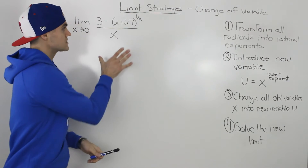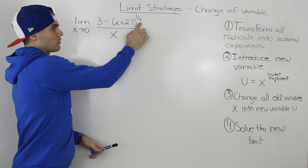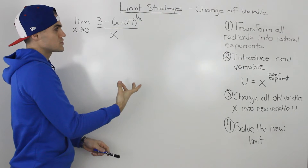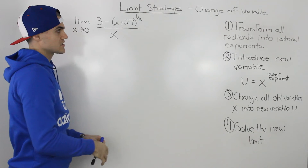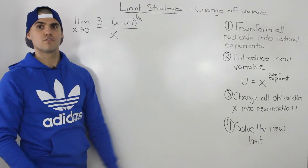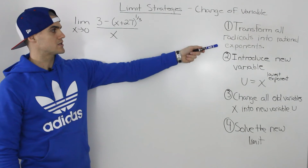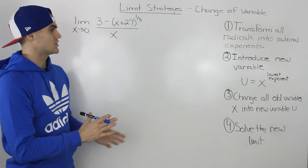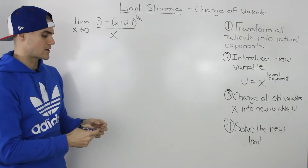The first thing to recognize with this particular limit is this power of 1/3. Whenever you have a rational exponent other than 1/2, or some kind of radical like the third root or sixth root, we know we're going to be dealing with the change of variable strategy. The first step is to transform all radicals into rational exponents. Notice in this question there are no radicals — everything is already in rational exponents.